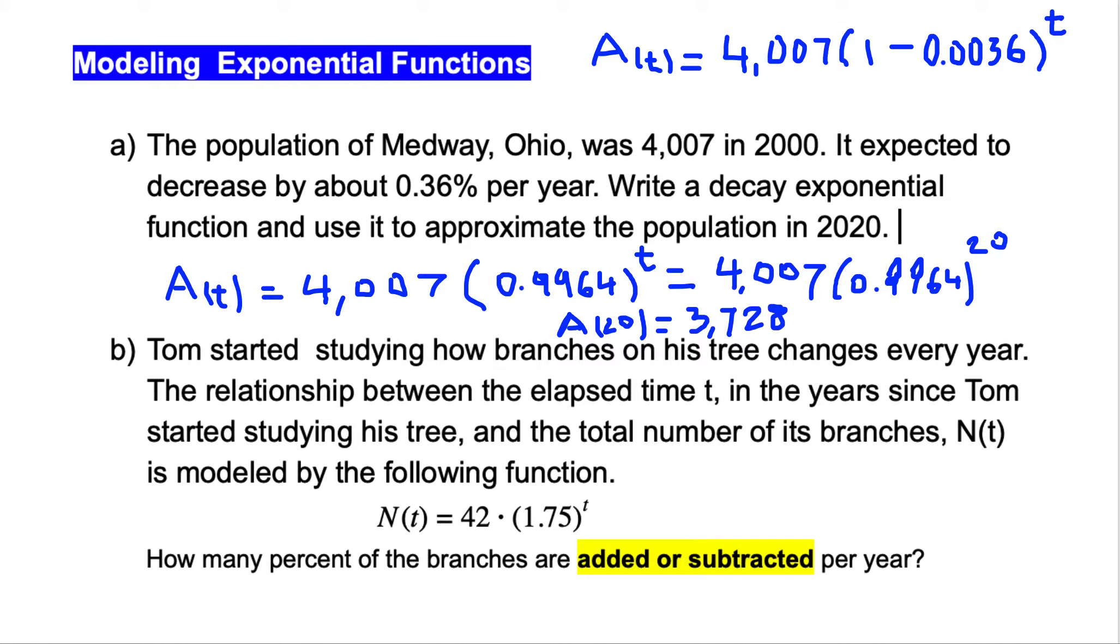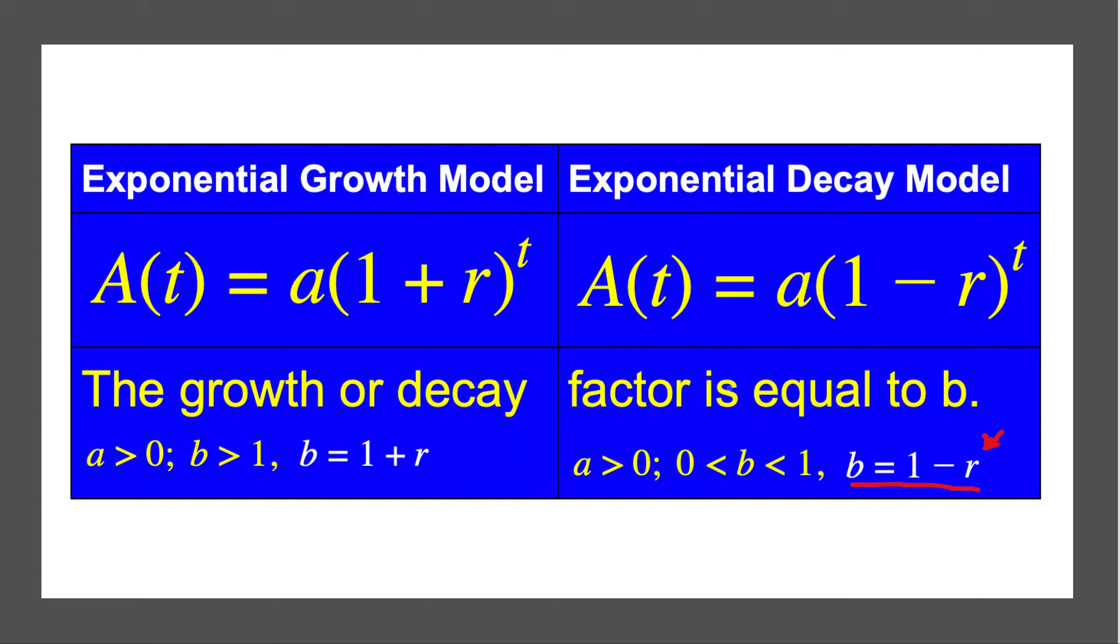If we are looking at the formula here, the b is greater than 1. It means we have an exponential growth model. This is an exponential growth function. We can use this formula: A of t equals a times 1 plus r to the t, and b equals 1 plus r. Now we are going to see how we can find this percentage.